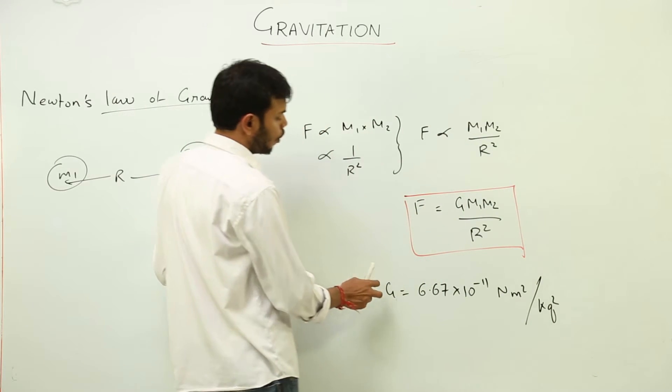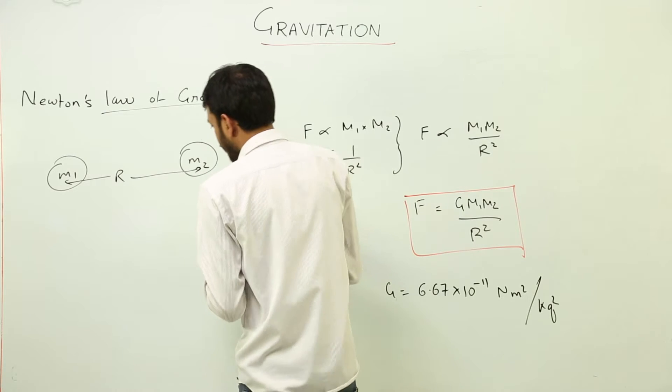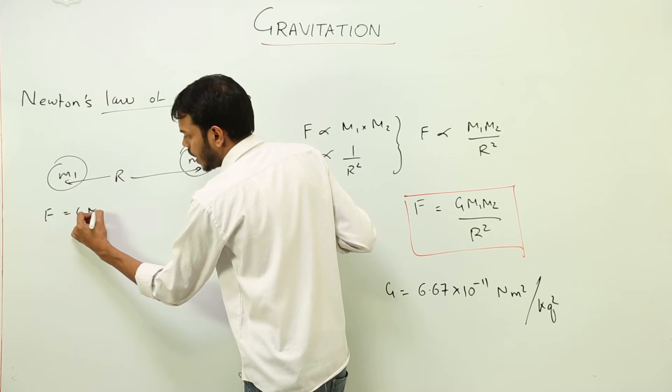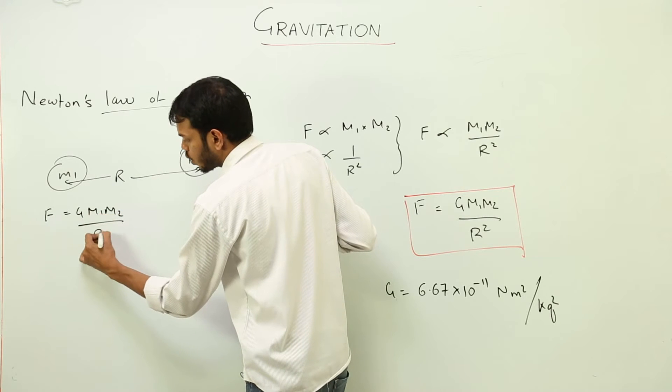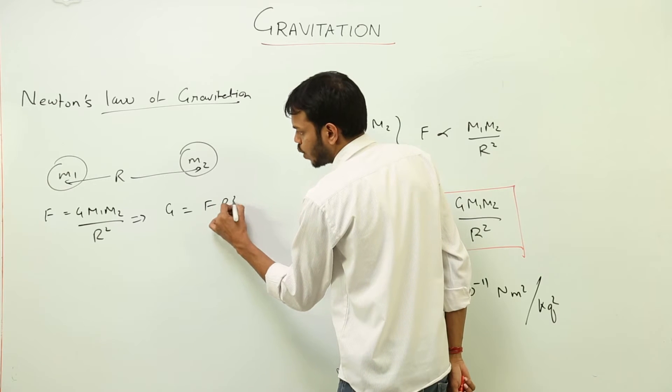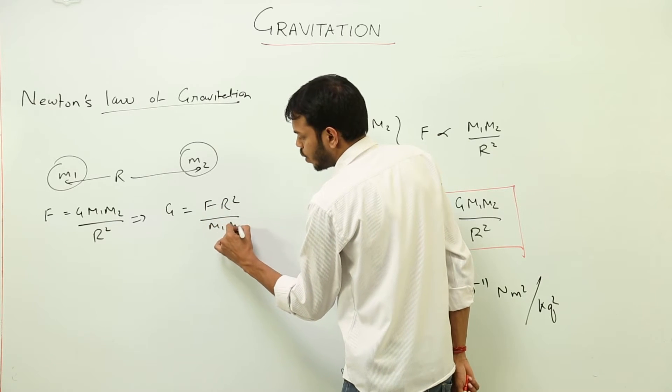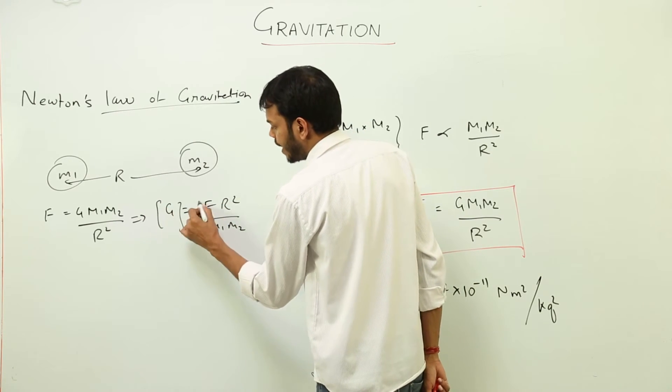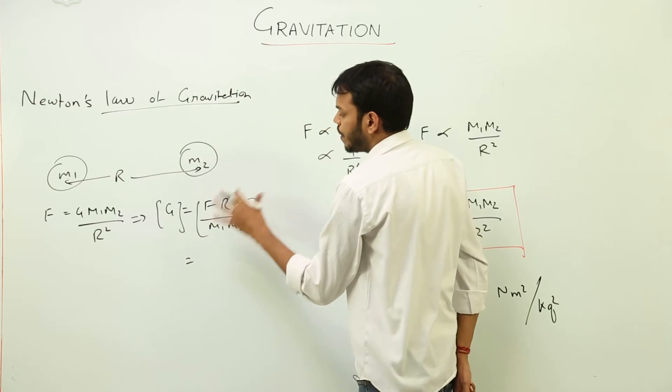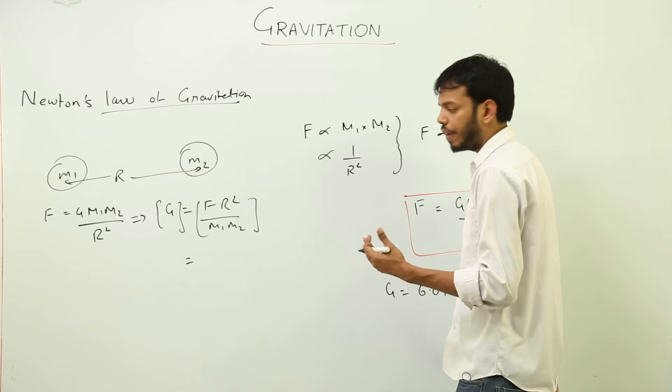Can we also find the dimension formula for G? Let's try. We have F equals G M1 M2 over R square. That gives me G equals F R square upon M1 M2. So if I have to find the dimension formula, I will do this. Right now I have to put the dimension formula of every single term.